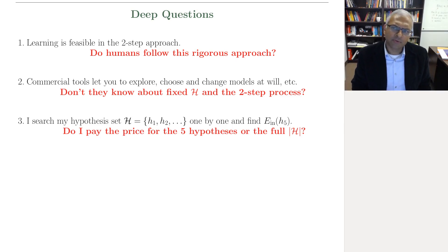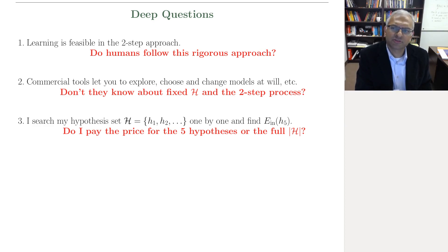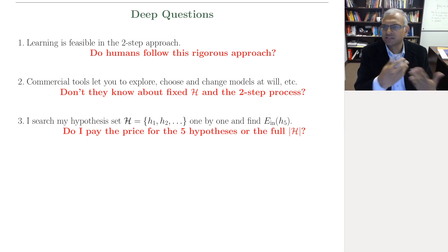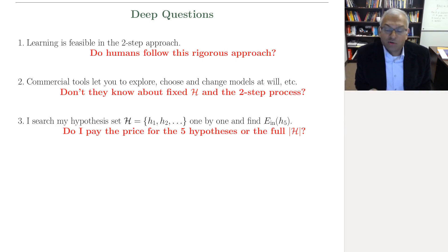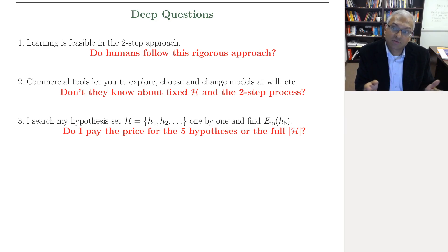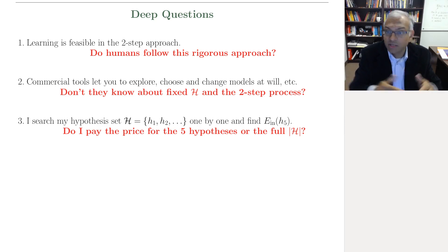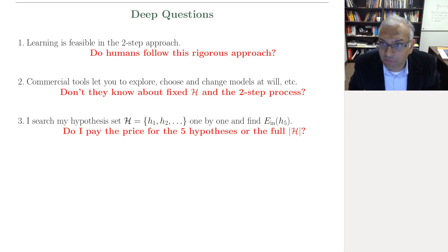Question 3: a very natural thing to do with a hypothesis set is to search hypotheses one by one. I try H1, it fails — meaning I don't get a good in-sample error. H2 fails, H3, H4, H5 — boom, I get close to in-sample error zero. So I pick H5 and I'm done. I only tested five hypotheses, so it seems I should only pay the price in the generalization error bar for those five. Why do I have to pay the price for the full hypothesis set size?